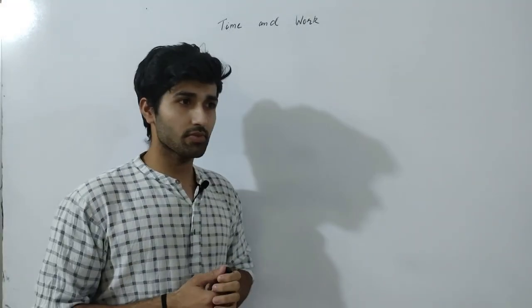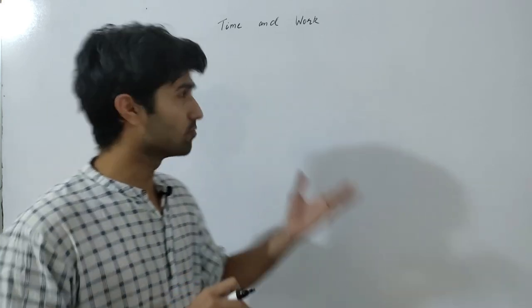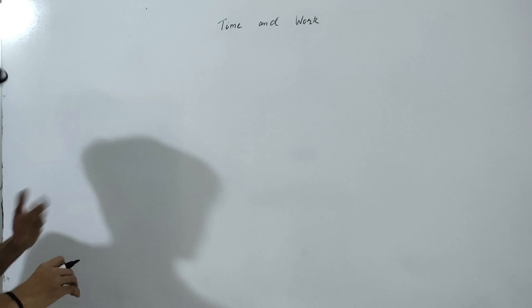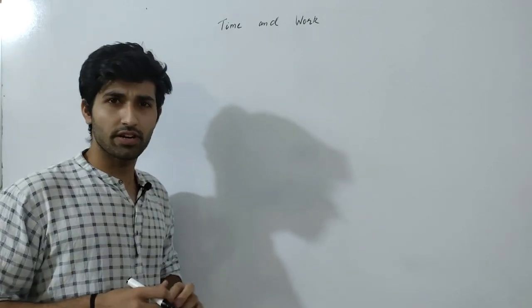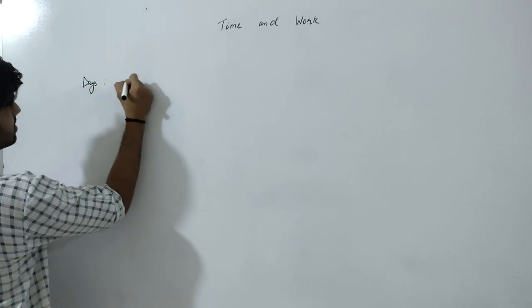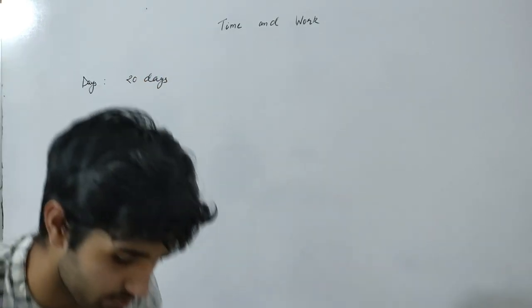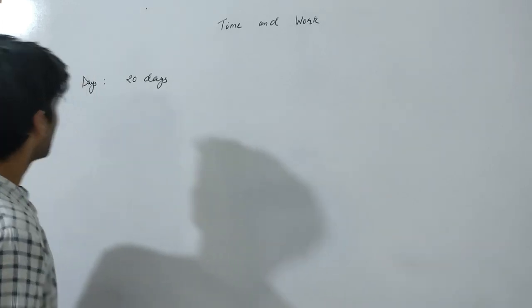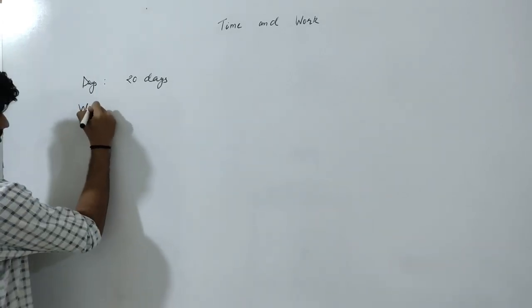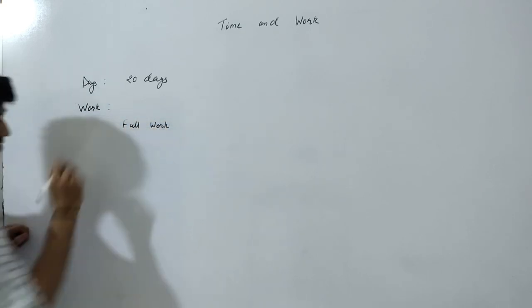Also, pick a pen and paper whenever there will be a question in front of you, try it by yourself and then check whatever approach I am following. So, I am not going to waste any more time and let's start with the concepts of time and work. Time and work. Let's work around first time, like work and time proportionality. So, let's say I can complete a piece of work in 20 days. I can basically complete a piece of work in 20 days. I can complete a certain piece of work in 20 days and I am talking about entire work, the full work.